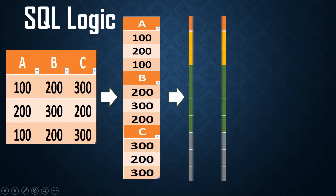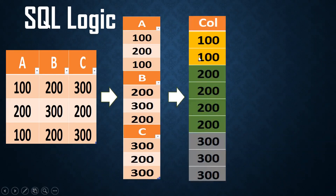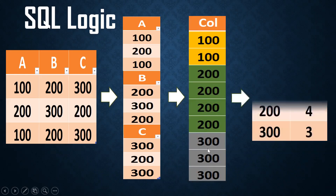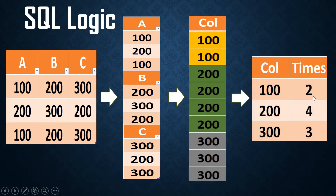Next step is grouping: 100 and 100 grouped as one, 200 and 200 grouped together, and so on. Finally, we find the number of occurrences. We club columns using UNION, then group using GROUP BY, and count occurrences using the COUNT function.